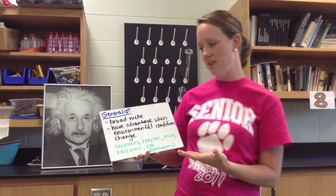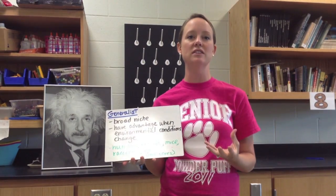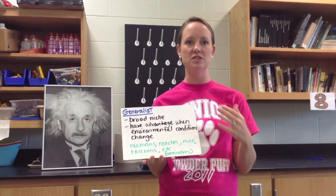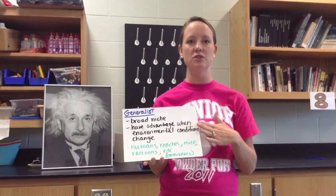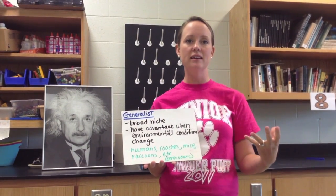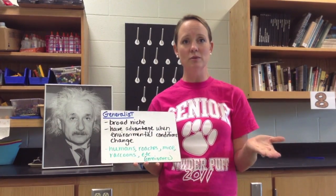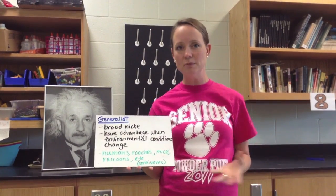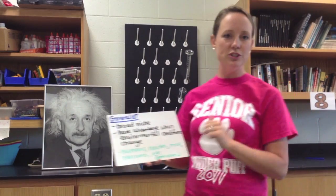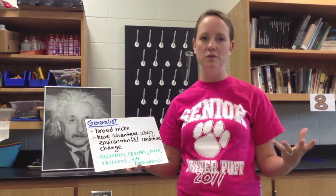These types of species are going to have an advantage when there is a change in the environment. If there's a catastrophe in an ecosystem, they're going to be those most likely to survive because they can live in different types of conditions. Some examples: humans, we can move from place to place, live in different biomes, and eat different foods. Roaches tend to survive everything. Mice and raccoons — raccoons will eat just about anything.